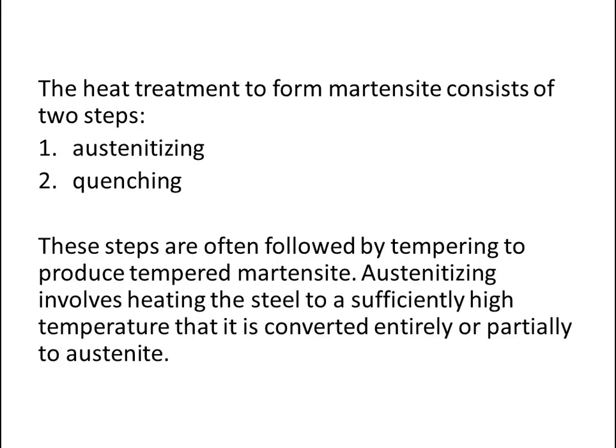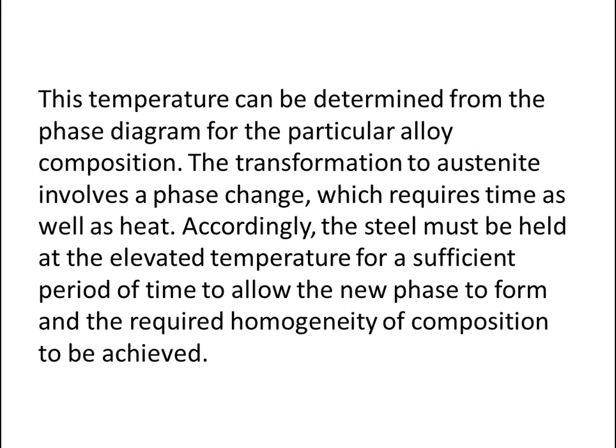These steps are often followed by tempering to produce tempered martensite. Austenitizing involves heating the steel to a sufficiently high temperature that it is converted entirely or partially to austenite. This temperature can be determined from the phase diagram for the particular alloy composition. The transformation to austenite involves a phase change which requires time as well as heat.